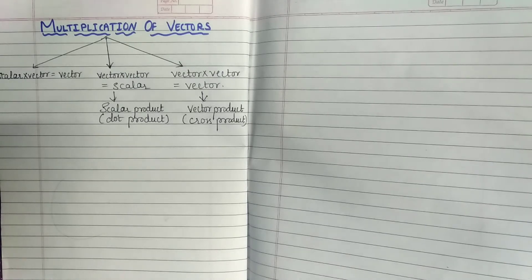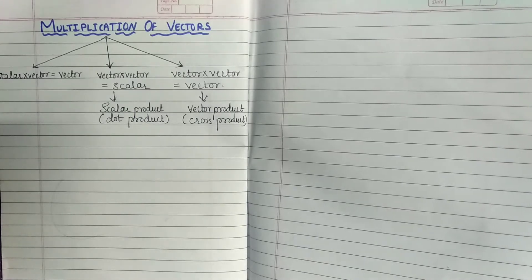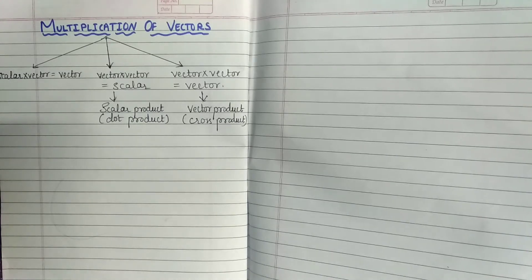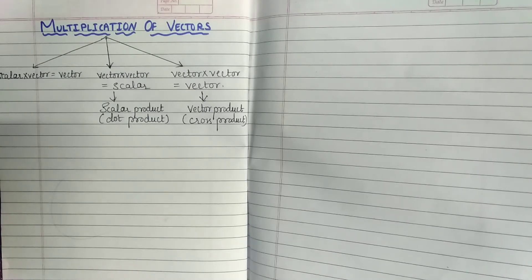For example, if you take work as 20 joule and another work as 10 joule — work is a scalar quantity — so 20 into 10 is 200 joules. When you multiply scalar with scalar it is always a scalar. But when you multiply scalar with a vector, it is always a vector.